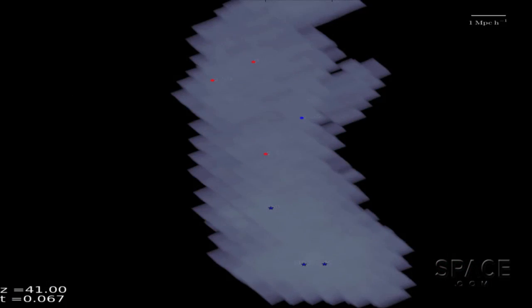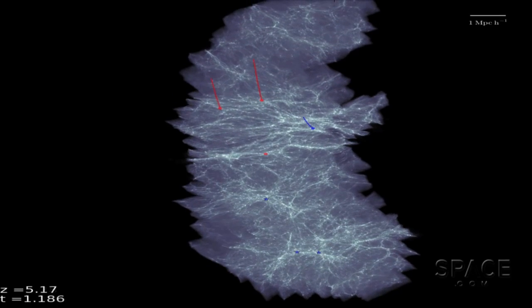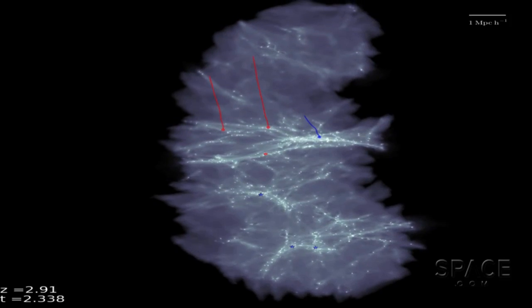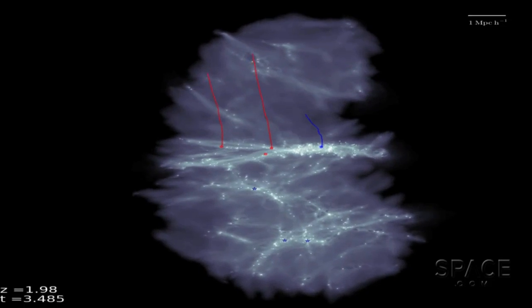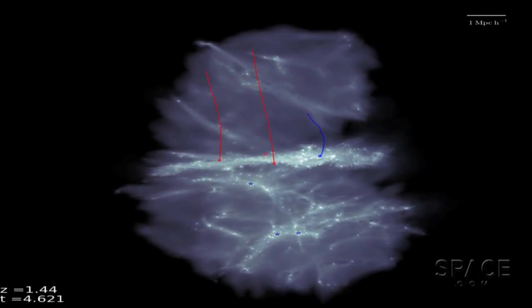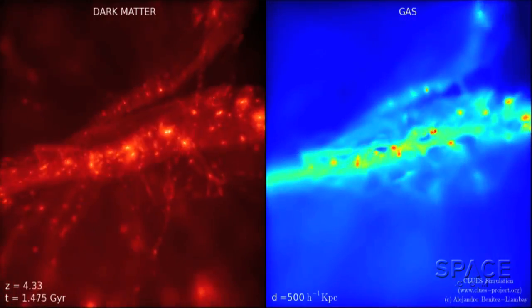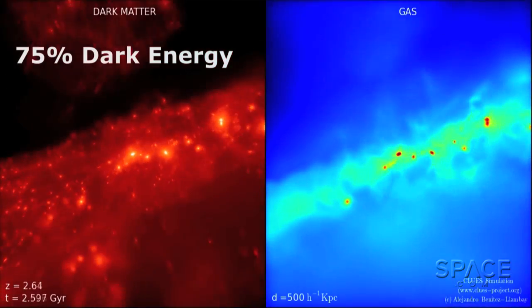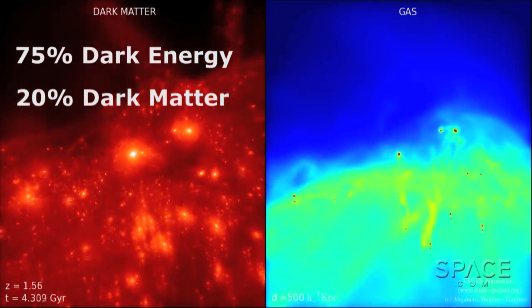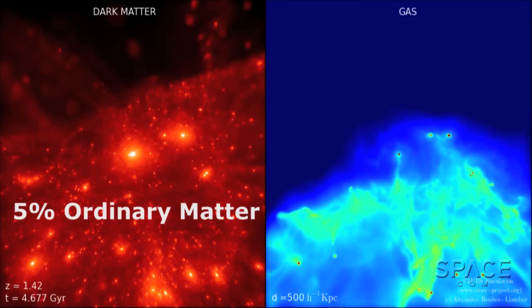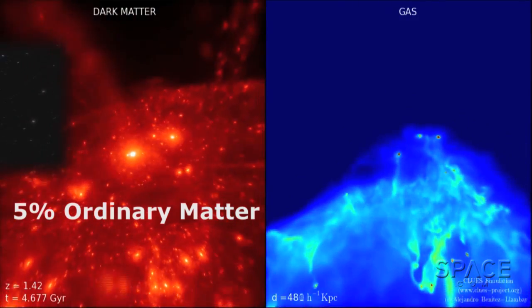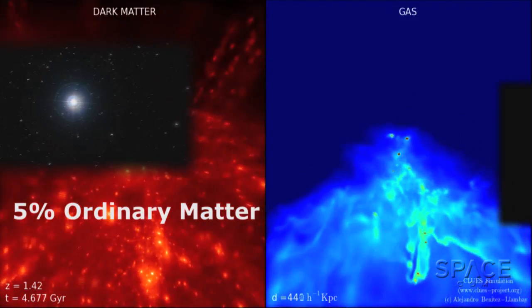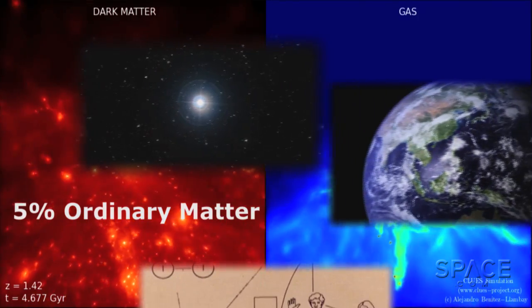This so-called cosmic web-stripping mechanism is driven by the filamentary structure of the Universe itself. And it lets astronomers keep their current grand model of a cosmos composed of 75% dark energy, 20% dark matter, and 5% ordinary matter, like stars, and planets, and you, and me.